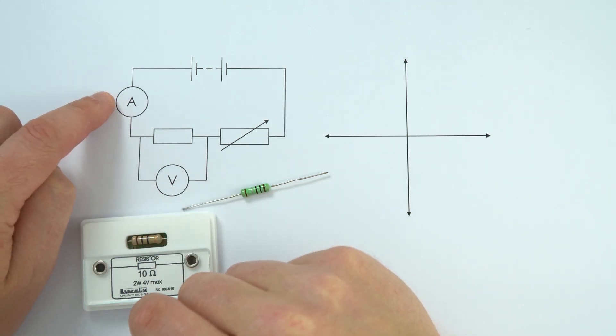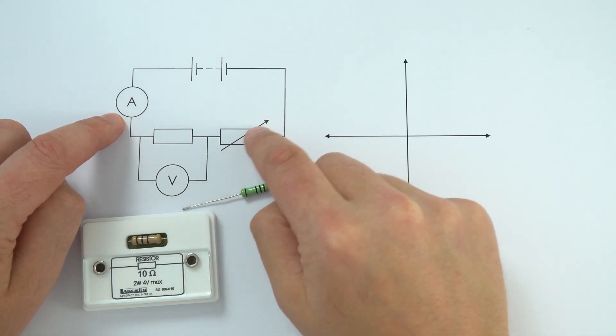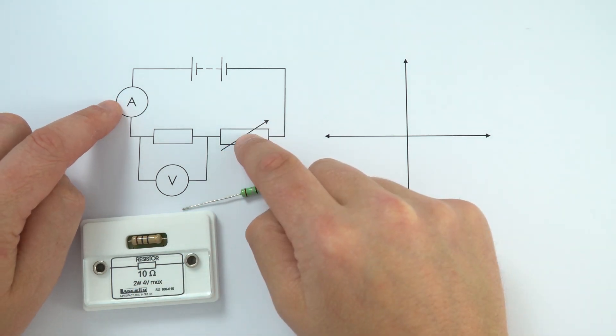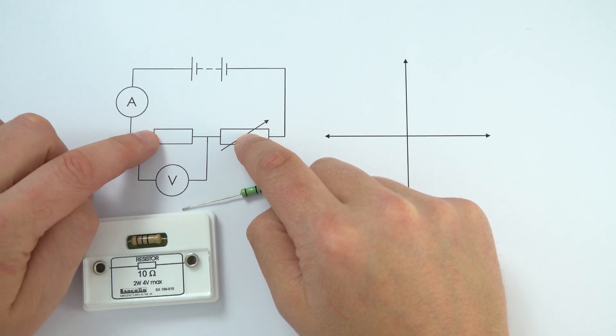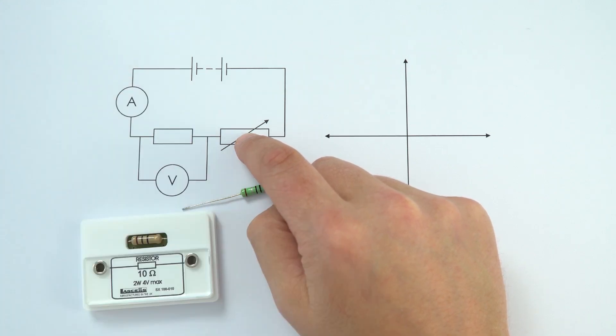We've got a current sensor, the ammeter, which is in series with it. We've got a variable resistor so we can control the current and potential difference across this component, and also a power supply.